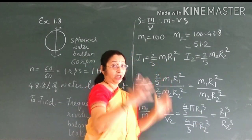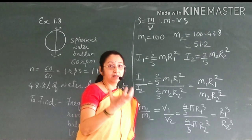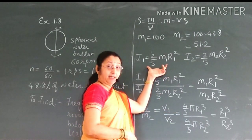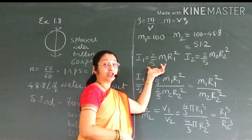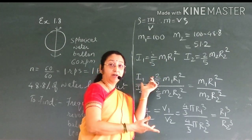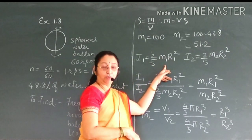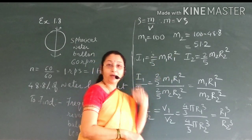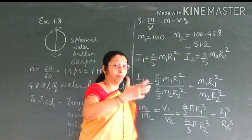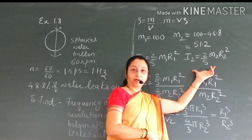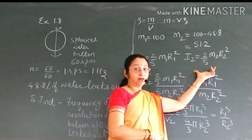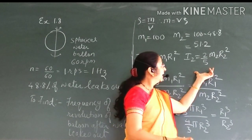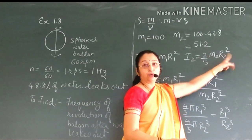Now, the moment of inertia — since the balloon is a sphere, it has a spherical shape. The initial moment of inertia I1 is (2/5) m1 r1 squared, the moment of inertia of the balloon before the leaking of the water. And I2, the moment of inertia after the water has leaked out, is (2/5) m2 r2 squared.